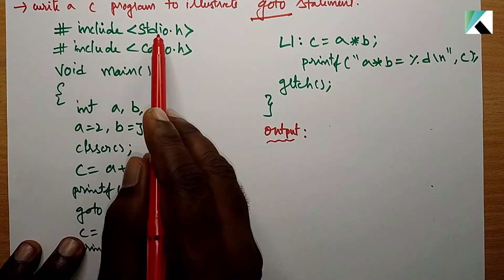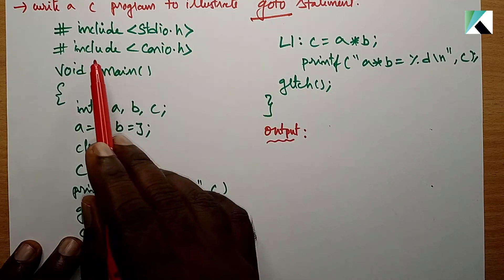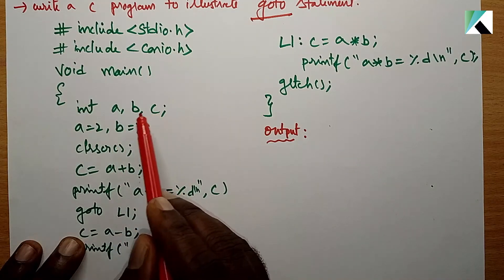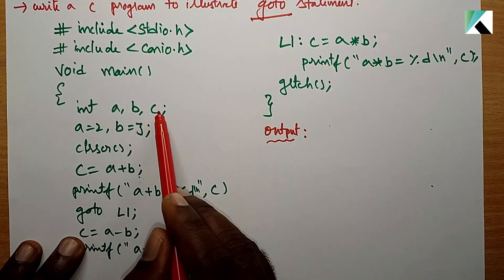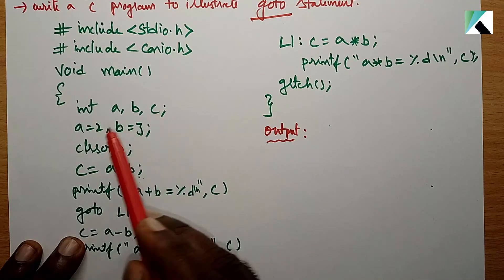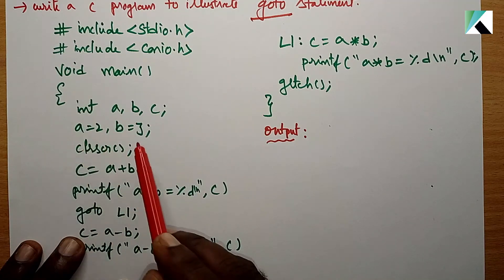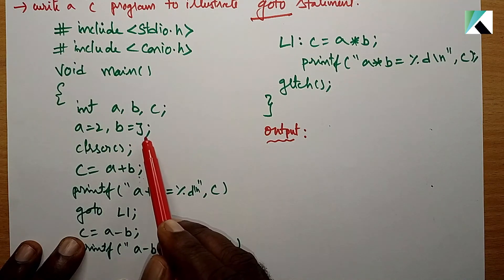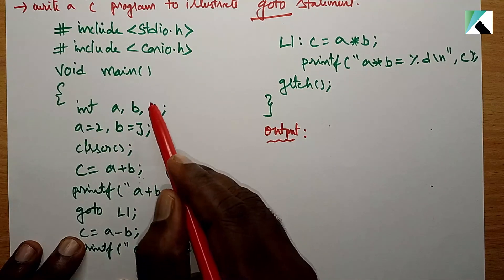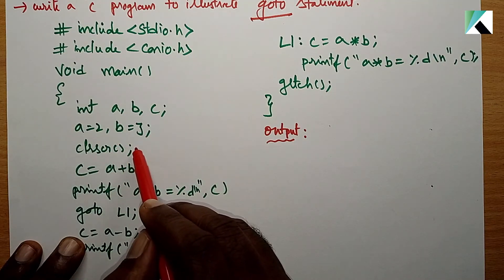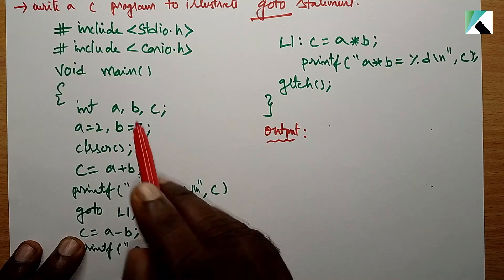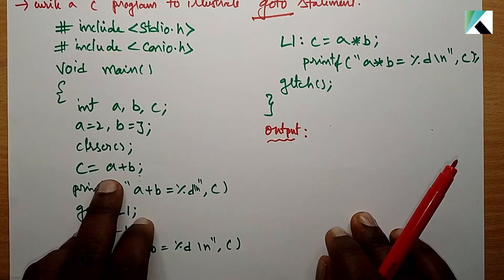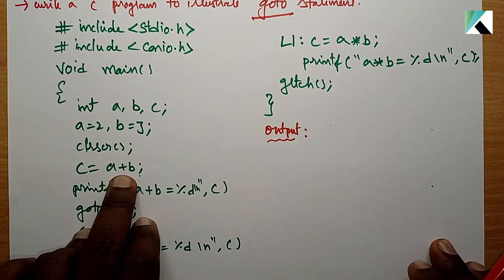In the program, we use clrscr. Here we have three variables: A, B, and C. After the variable declaration, we use clrscr. Then we write the statement: C is equal to A plus B.